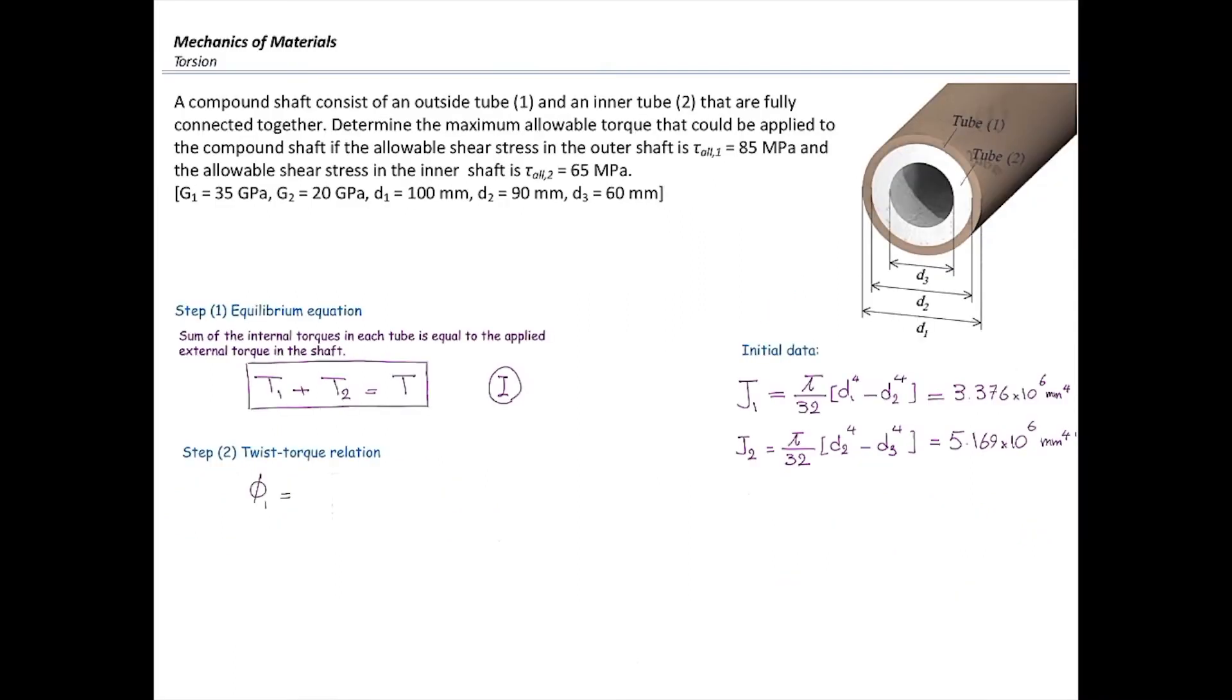Then move on to the relationship between torques and twists. Twist in shaft number one is going to be TL over GJ. Similarly, L is going to be the same for both shafts. T1 is unknown, L I'm just going to leave as L, G1 is 35 gigapascals which I have to convert to megapascals, and J1 is just calculated. That would give me T1 L divided by 118.2 times 10 to the 9th. Similarly, I'm going to determine φ2, plug in the numbers, and we get T2 multiplied by L divided by 103.4 times 10 to the 9th.